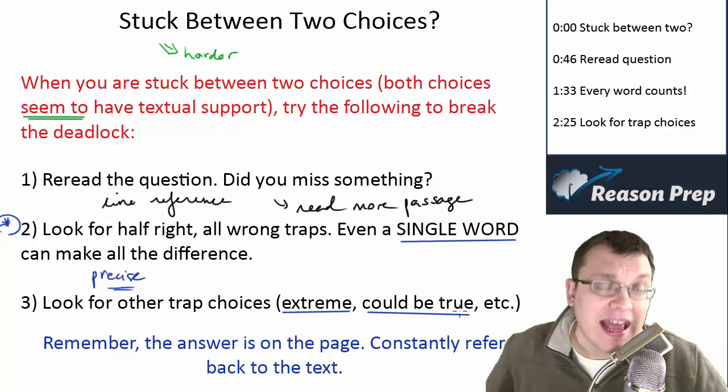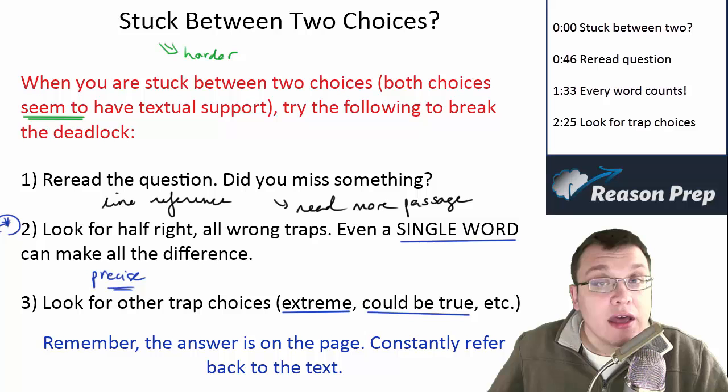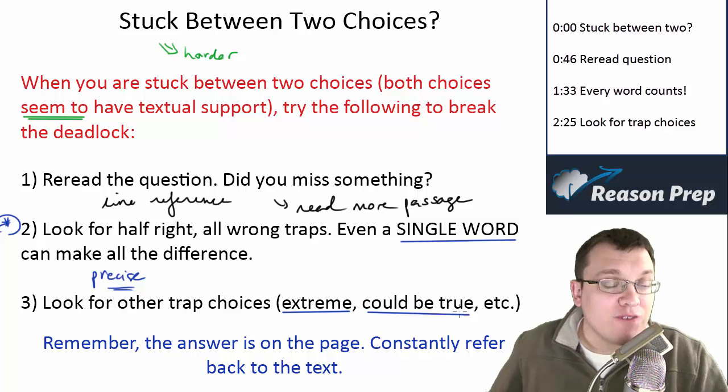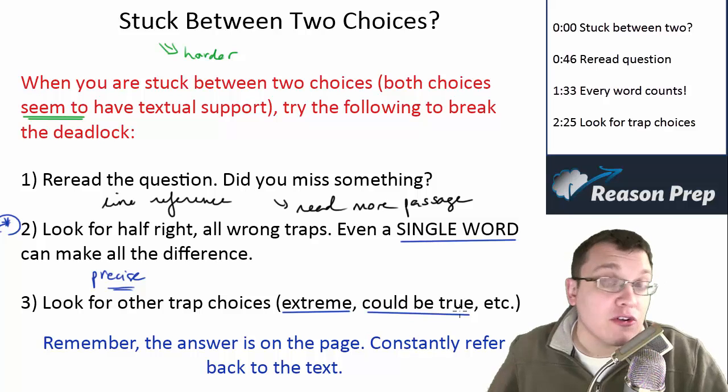All these kinds of trap choices can help you avoid something that may at first look tempting and go with the choice that may at first not seem as good perhaps, but ends up being better because the other choice has a problem.